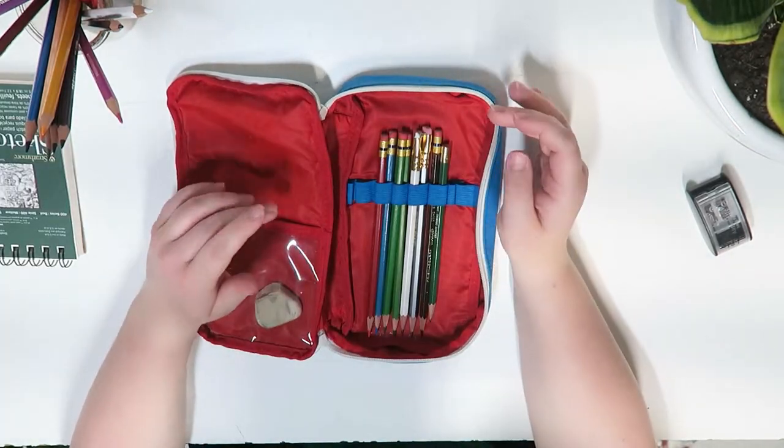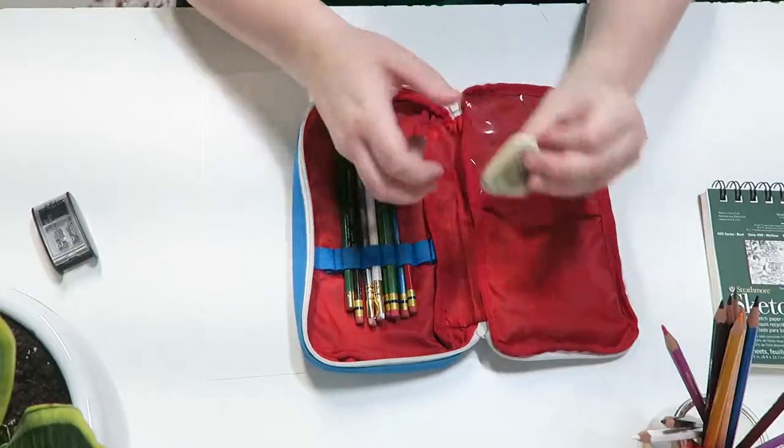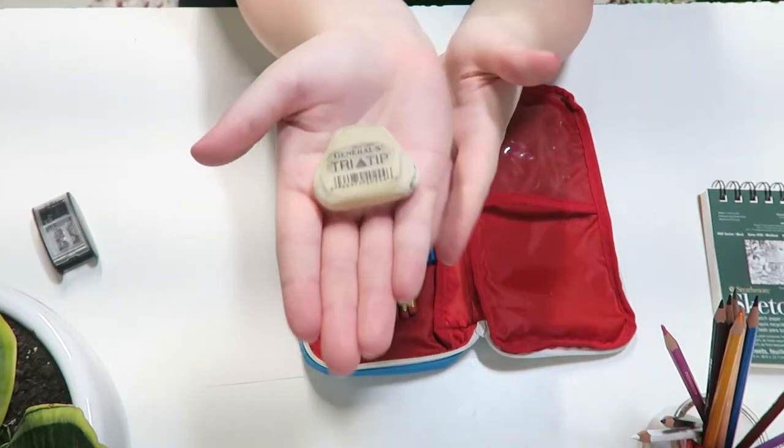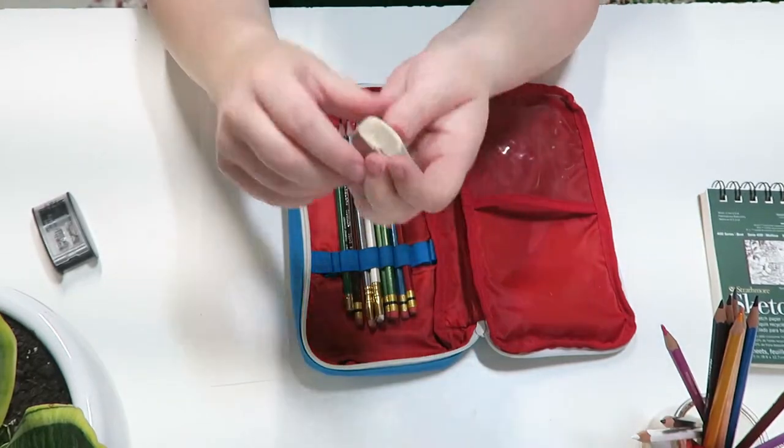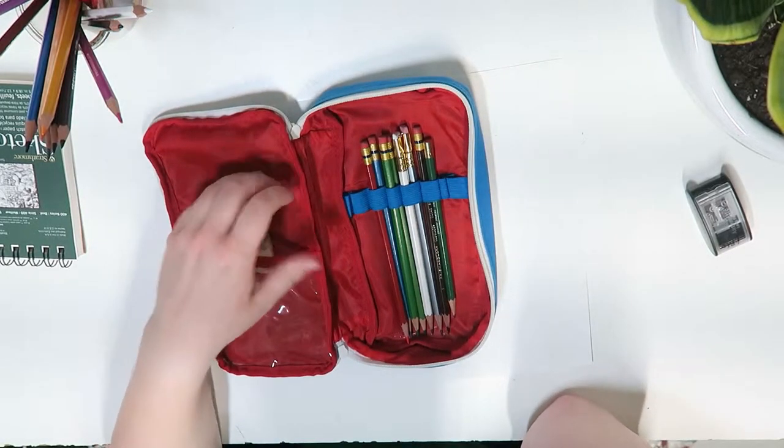The next item I want to show you guys is my all-time favorite eraser. This is the General Tri-Tip Eraser. And this guy has been my best friend forever. I've gone through so many of these. They're just a great all-around eraser. I love the shape because you get a nice corner to them. And as you can see, mine is pretty beat up.